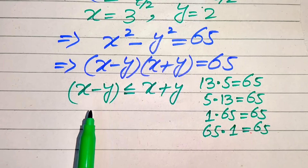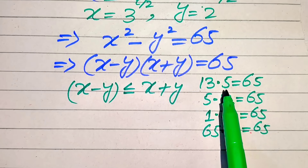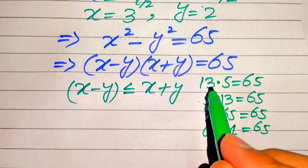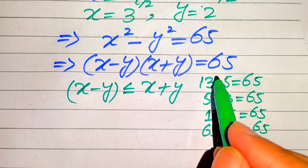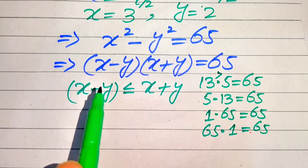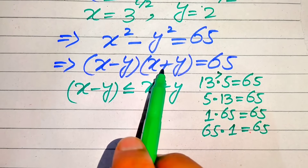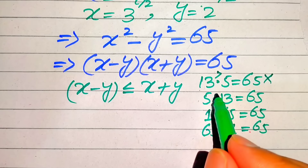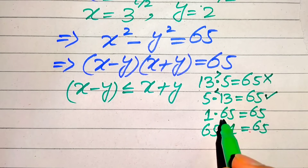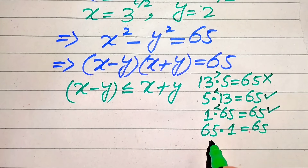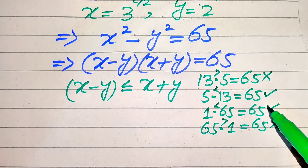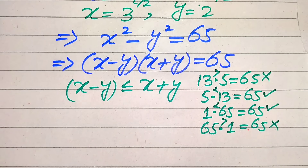To choose valid pairs, we need the first number to be less than the second number. Since 13 is greater than 5, we reject that pair. Since 5 is less than 13, we accept it. Since 1 is less than 65, we accept it. Since 65 is greater than 1, we reject that pair. So we have only two valid cases.